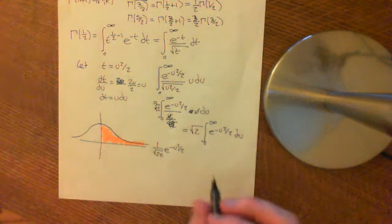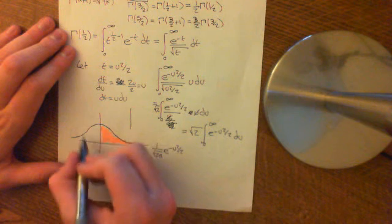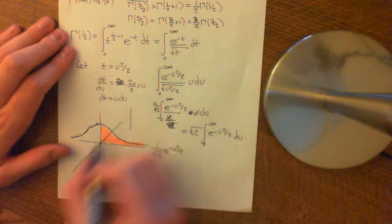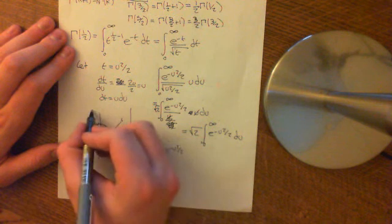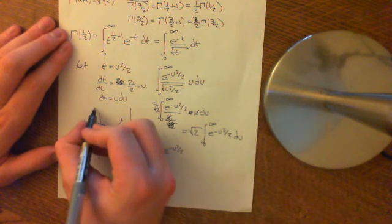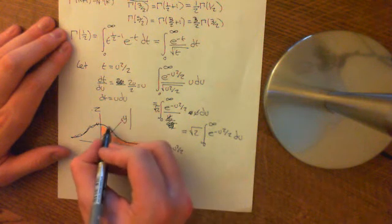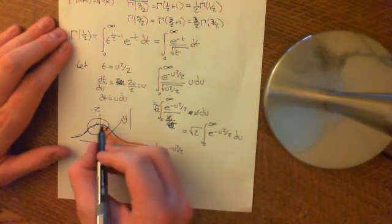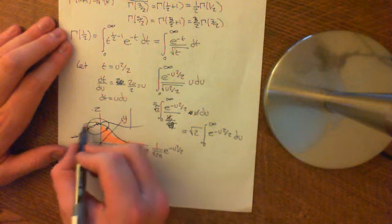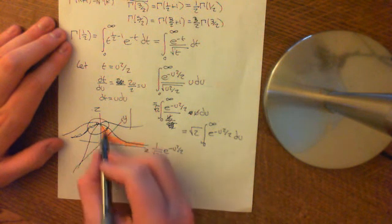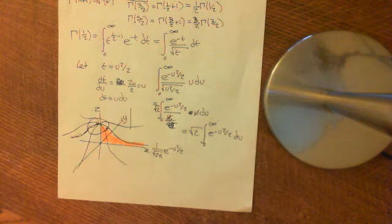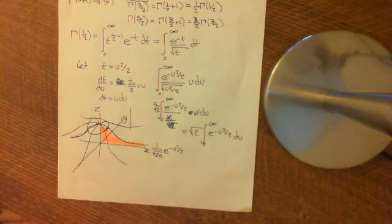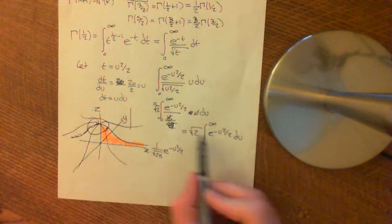The way in which you do that is you imagine rotating this curve around 360 degrees to create a 3D surface — a surface of revolution. We'll call this the Z axis up here, the Y axis and X axis down here. Rotating the graph around creates a surface that looks like a molehill. There are two ways to work out the volume of that molehill, and one way will reduce to this integral.